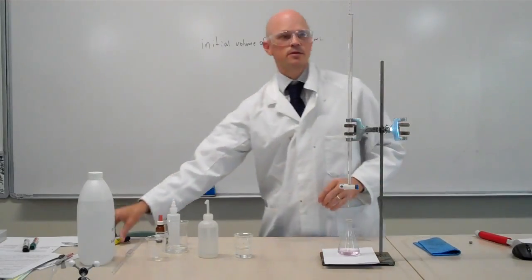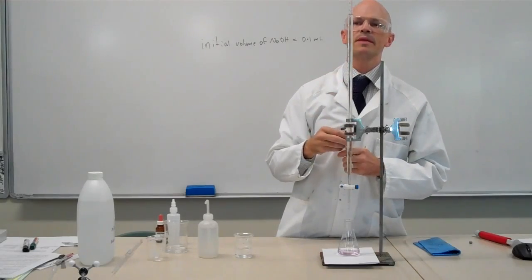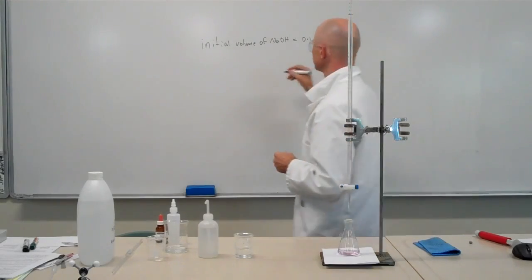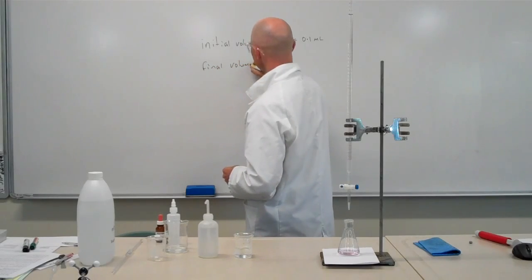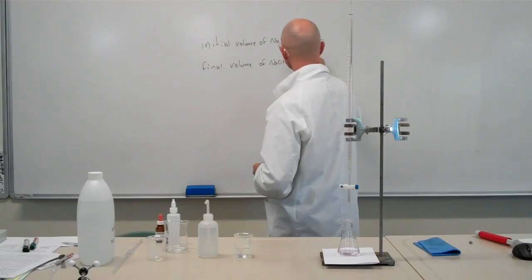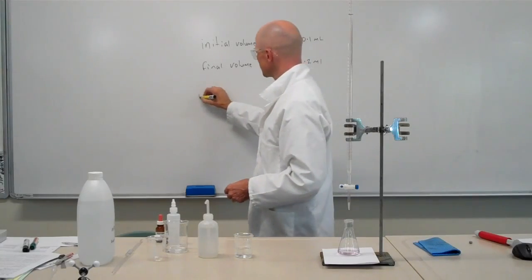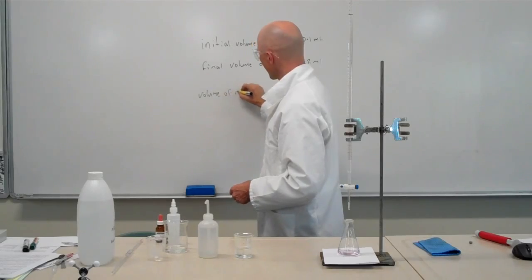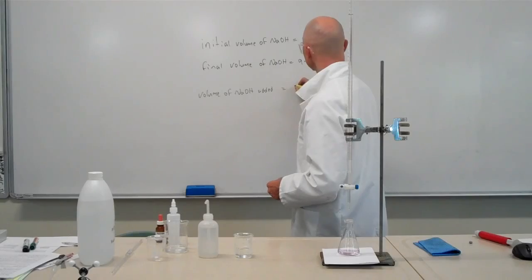I would now measure my amount of sodium hydroxide. I'm now down to 9.2 ml. So my volume of sodium hydroxide added equals 9.1 ml.